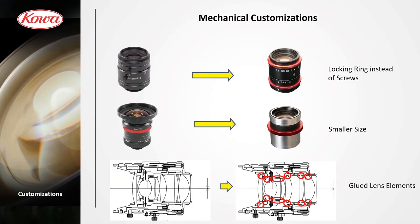An additional option for mechanical design is mechanical customization. There are several options. You can see an example of changing the mechanical design from screws to locking rings. There is also the option of making a lens smaller by removing the filter thread. And another option is gluing the inner lens elements — depending on the complexity of the optical design, you can glue the optical elements of standard lenses in production to make the optical axis more stable.